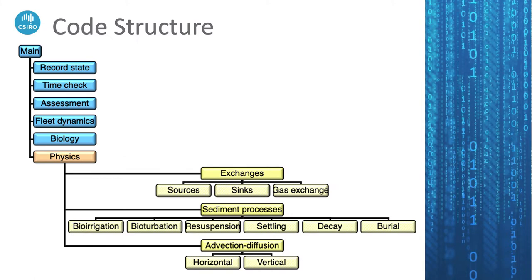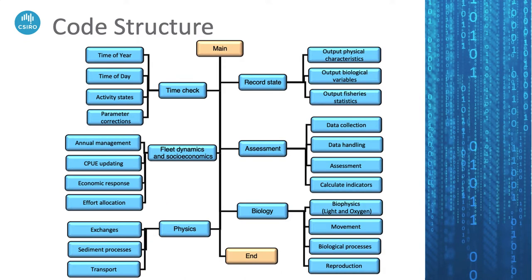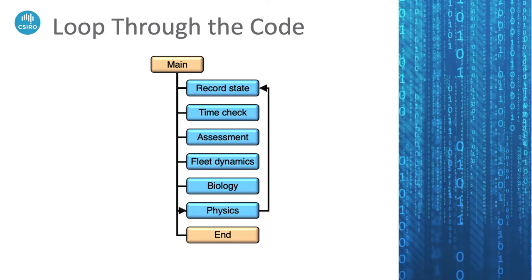The last library to be called is the Physics Library, which looks at all the physical processes and moves things around — particularly passive suspended things like plankton, detritus, and nutrients — basically getting the situation all set for the next time step, which will be recorded at the start of the next time step. In reality, the model loops around quite a few times between recording state and running physics before you get to the end state, which is either when the delete-to-halt run file is removed or you get to the t-stop value in your run parameter file.